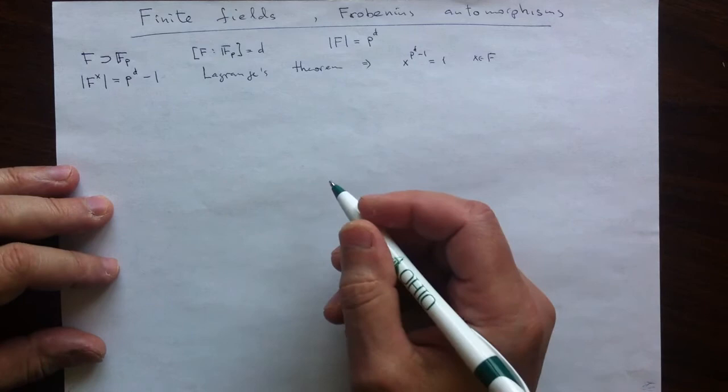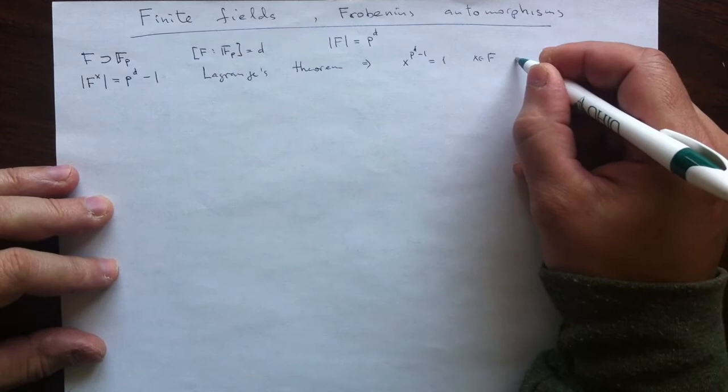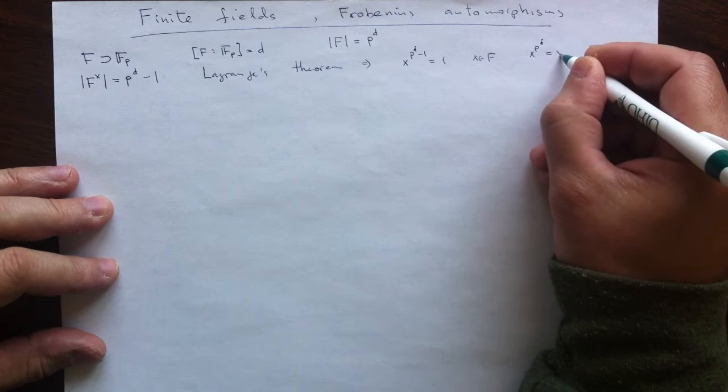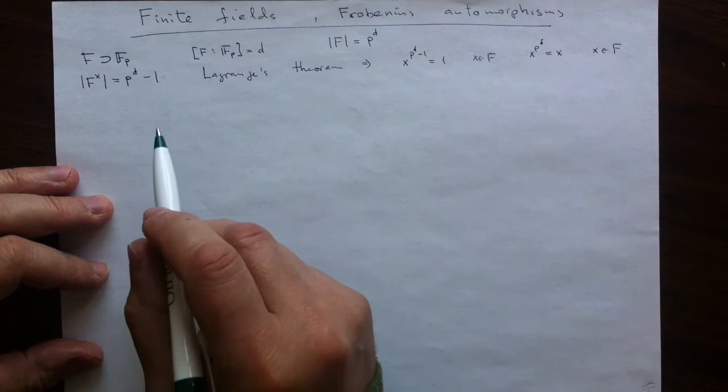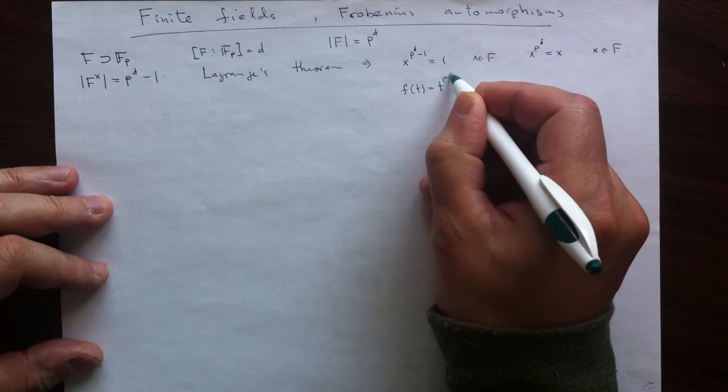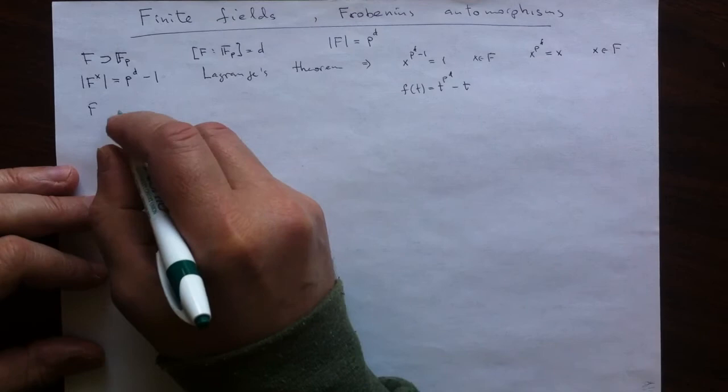And if we want to bring back 0, we can just multiply from 1 by 0, and then have this analog of Fermat's little theorem, that this is always equal to the actual number if the number is from our field. So any field element is a root of the polynomial. And moreover, our field must be its splitting field.